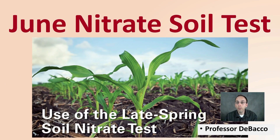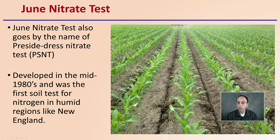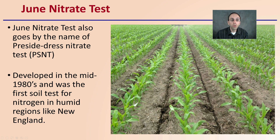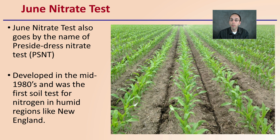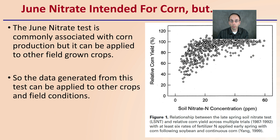Let's get into the June Nitrate Soil Test. The June Nitrate Test also goes by the name of Pre-Sidedress Nitrate Test, or the PSNT. It was developed in the mid-1980s and was the first soil test for nitrogen in humid regions like New England. We typically see it associated with corn, but it can be used for other crops as well.